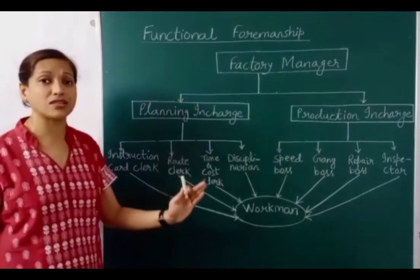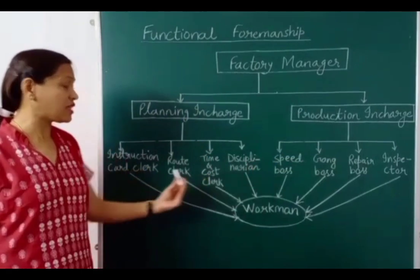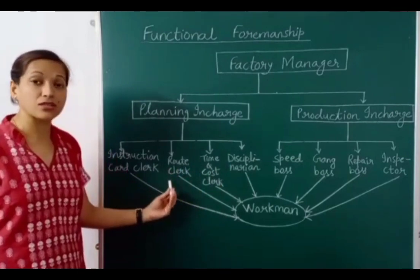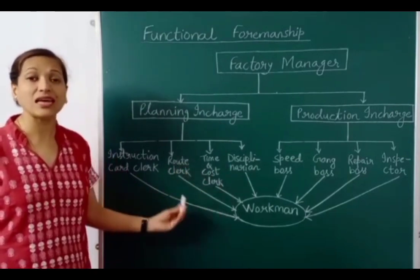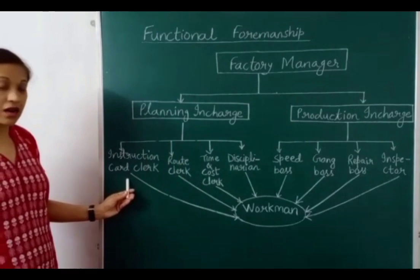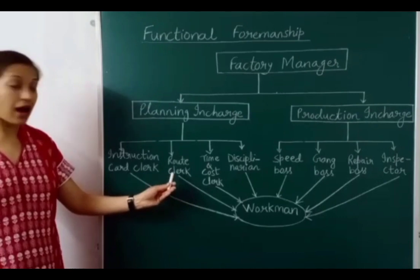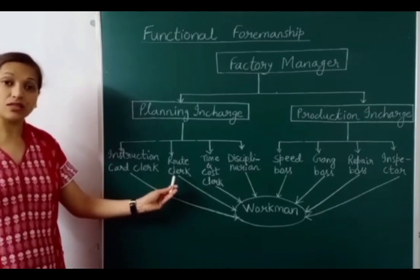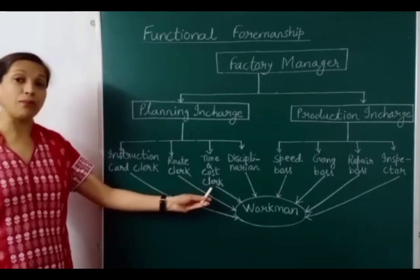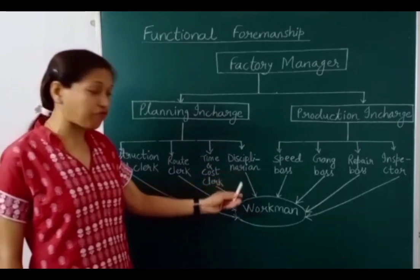No single person could possess all these qualities. So Taylor proposed 8 foremen or 8 supervisors — 8 specialists. Under the planning process: the instruction card clerk drafts instructions for the work, the route card clerk specifies the sequence of operations of man and machine, the time and cost clerk prepares the time and cost sheet, and the discipline clerk maintains discipline.